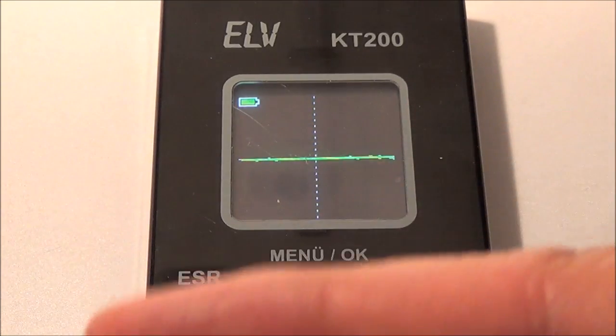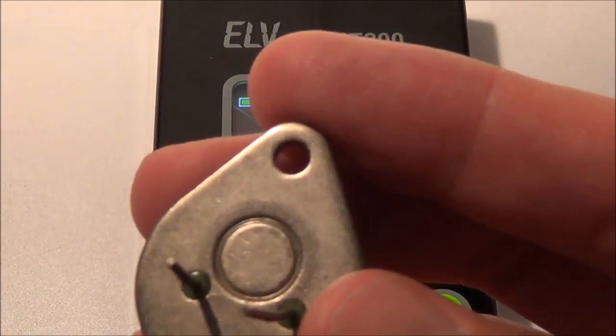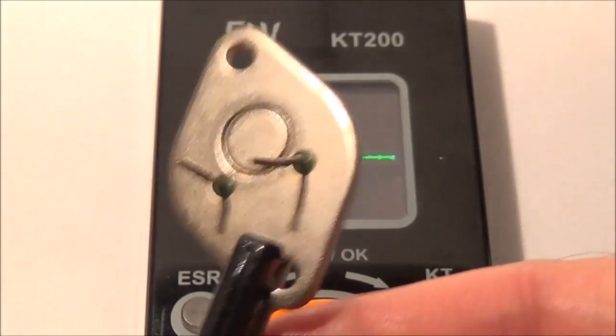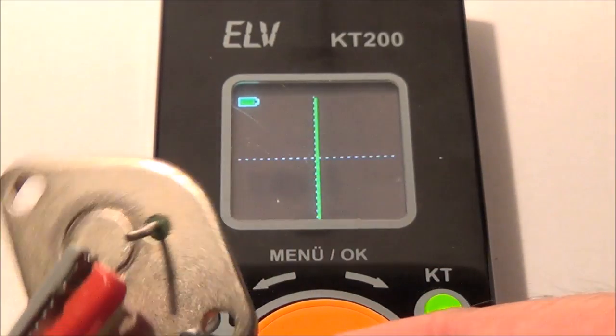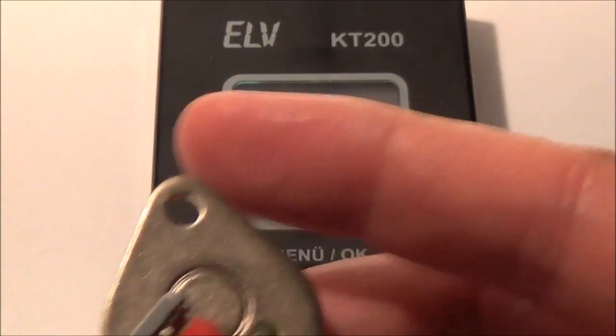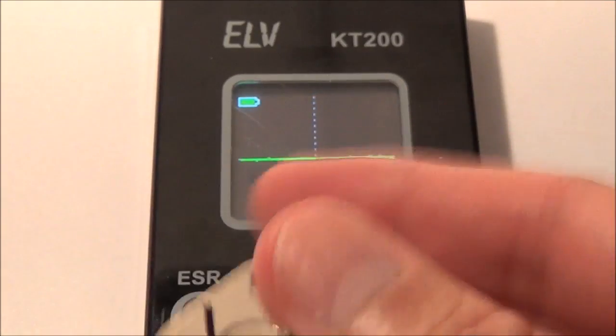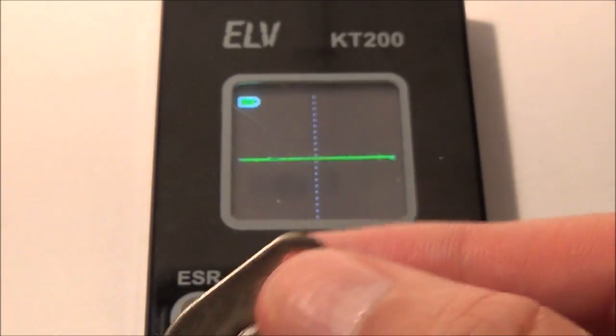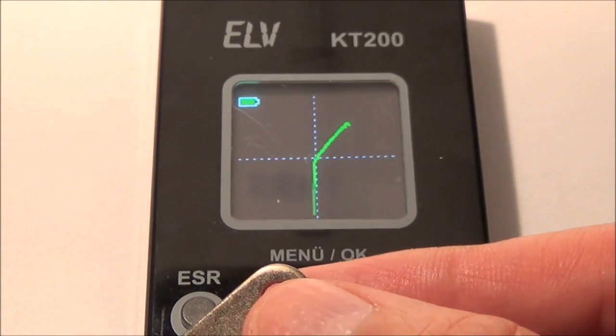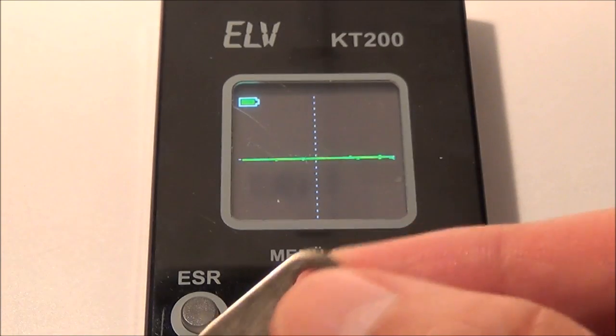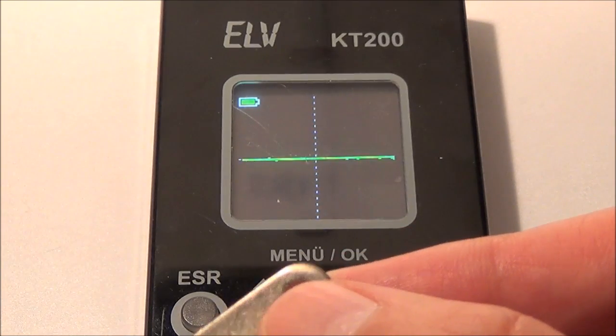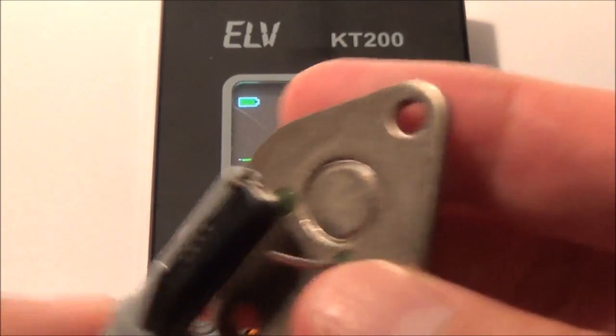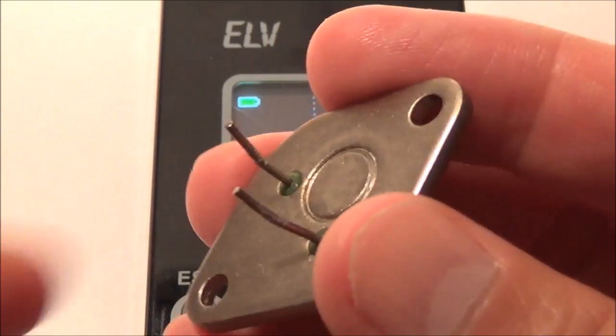Now back to the bad transistor. Let's check between the collector and the emitter. That is a dead short. Now we'll check between the emitter and the base. That doesn't look good. Now between the base and the emitter. That doesn't look good either. So this one is definitely bad.